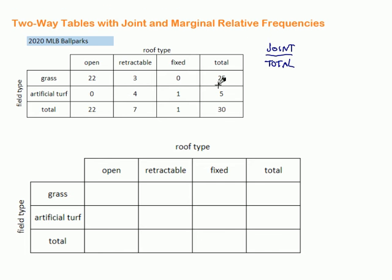To get the marginal relative frequencies, we're going to add up the rows and the columns on our table.